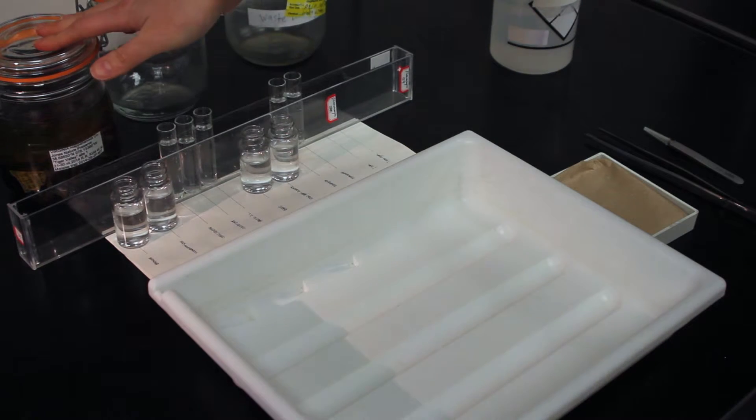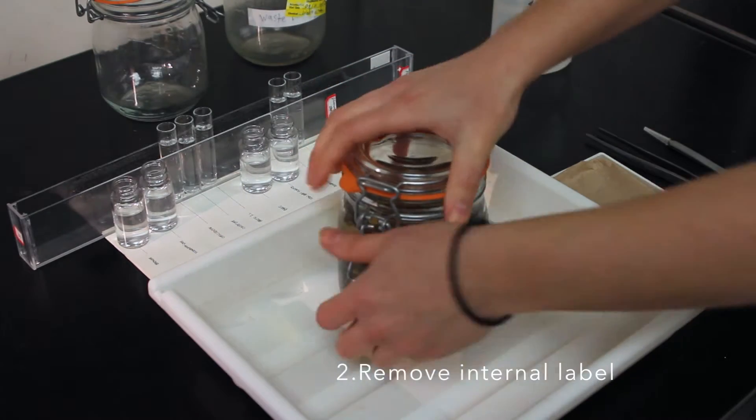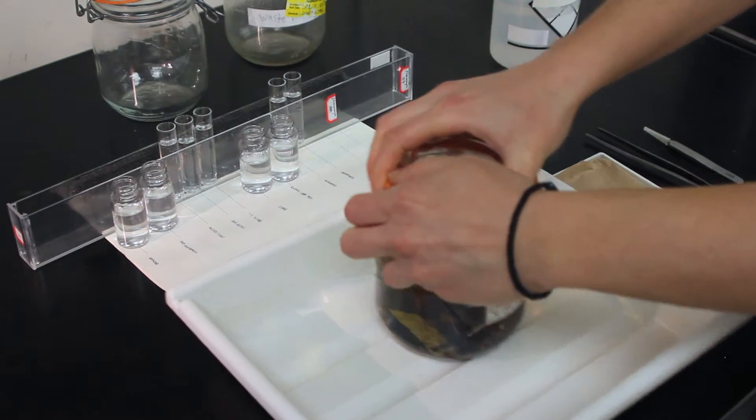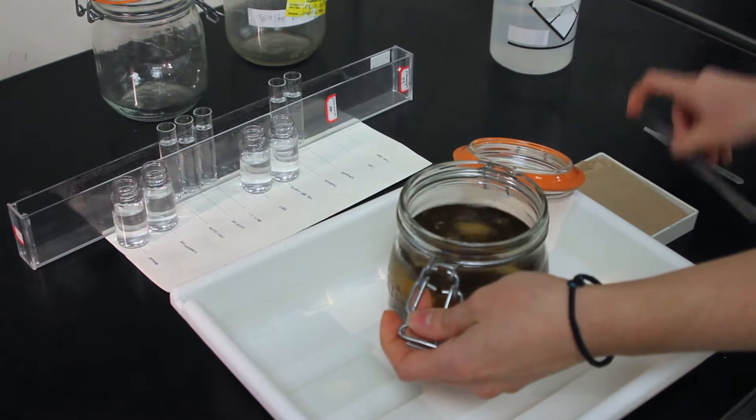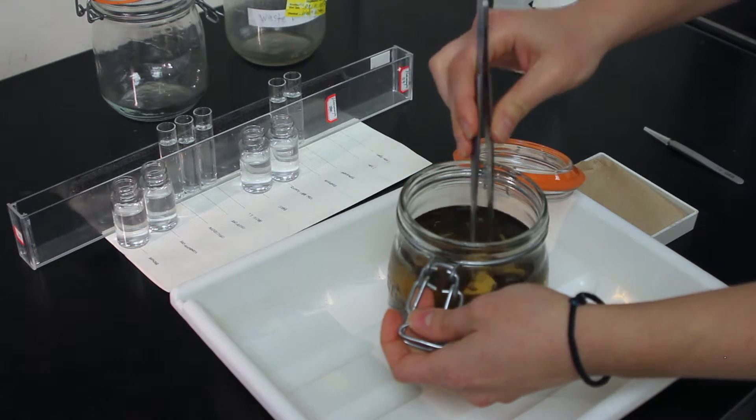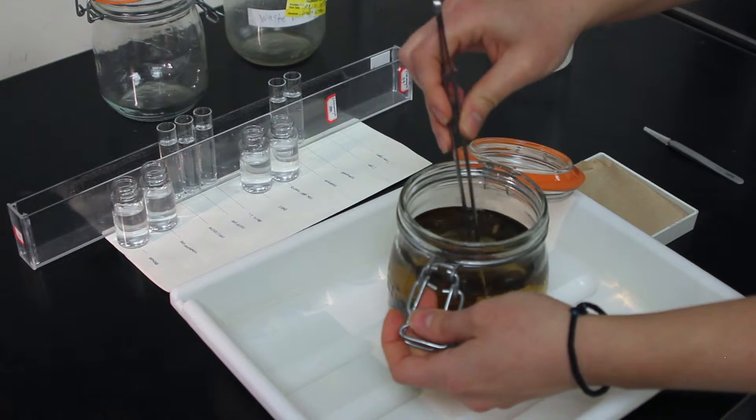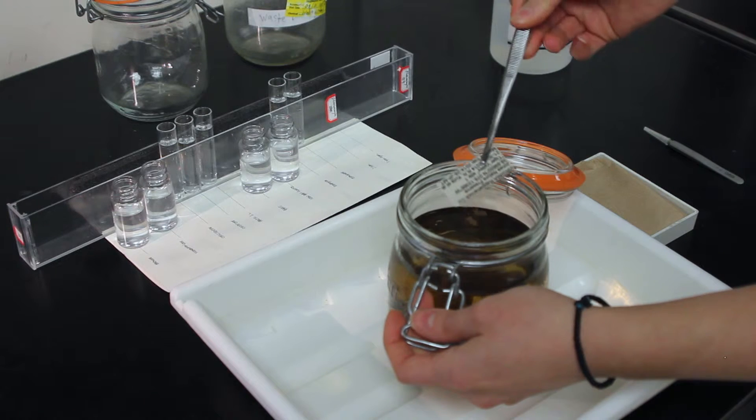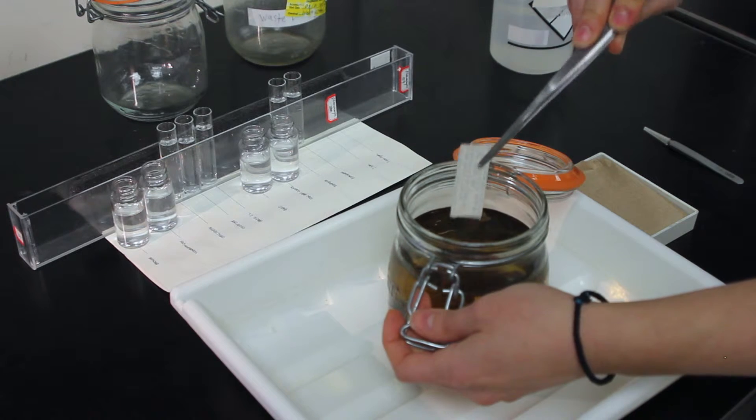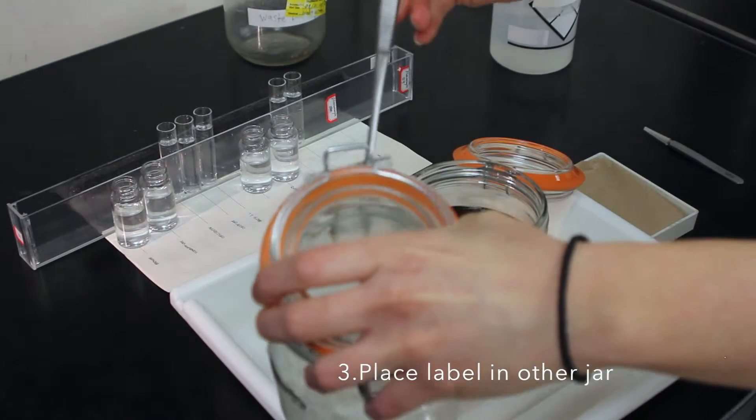From your sample container, you'll need to remove the internal sample label using your large forceps. And we have to be careful to make sure that the label does not contain any organisms sticking to it. We're going to place it in our clean bale top jar.